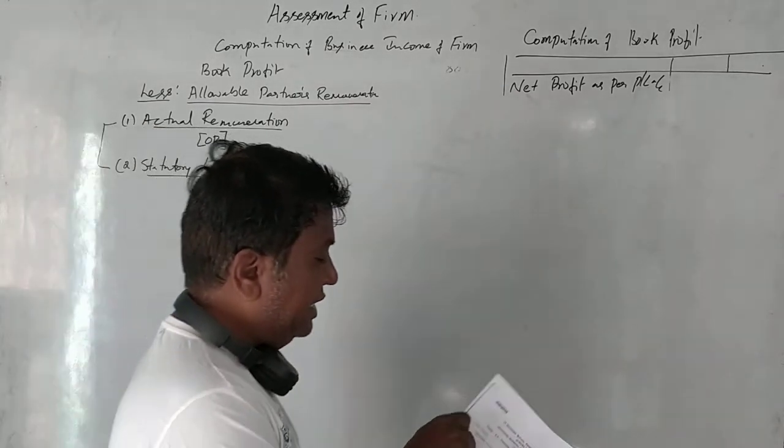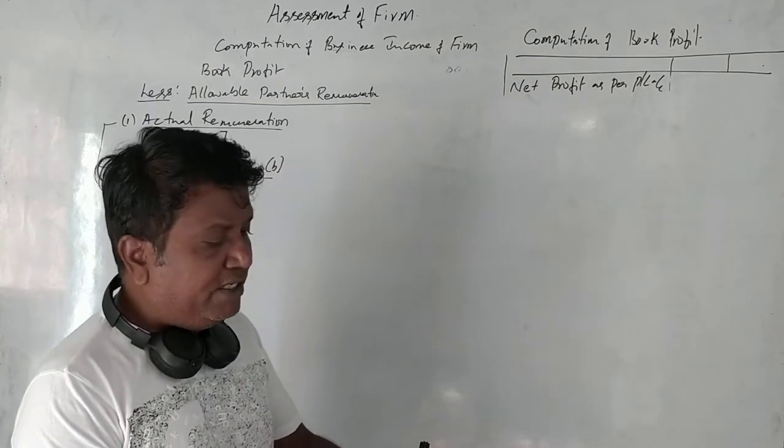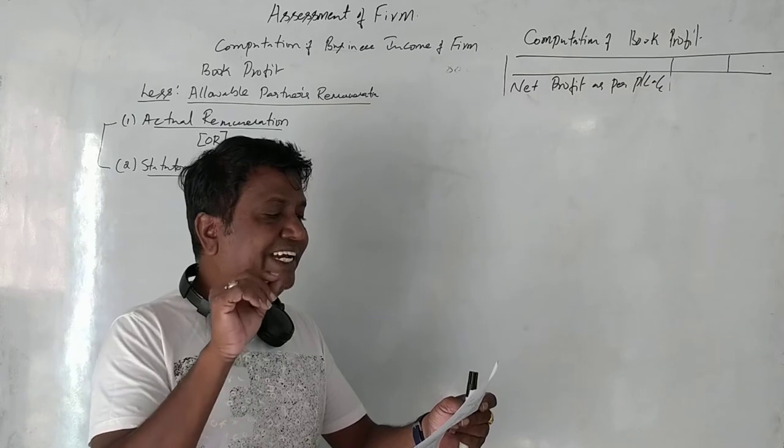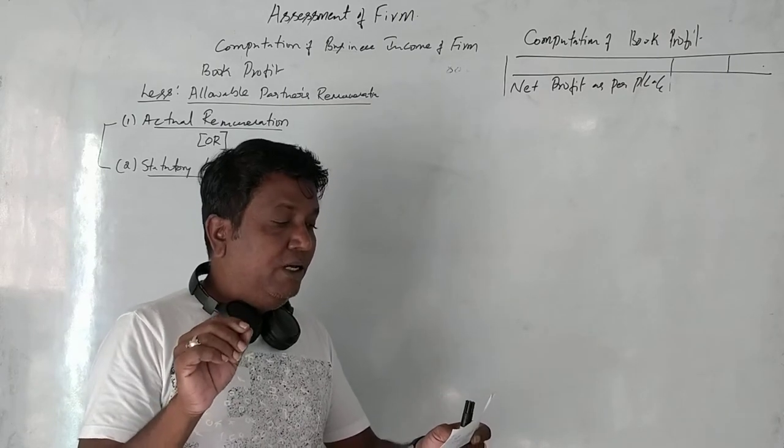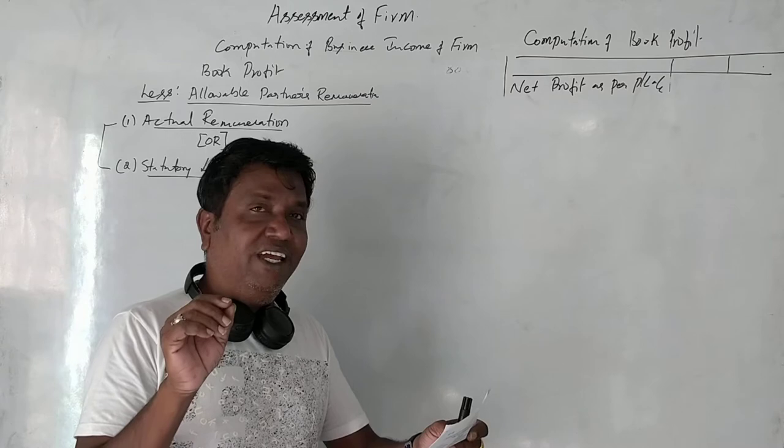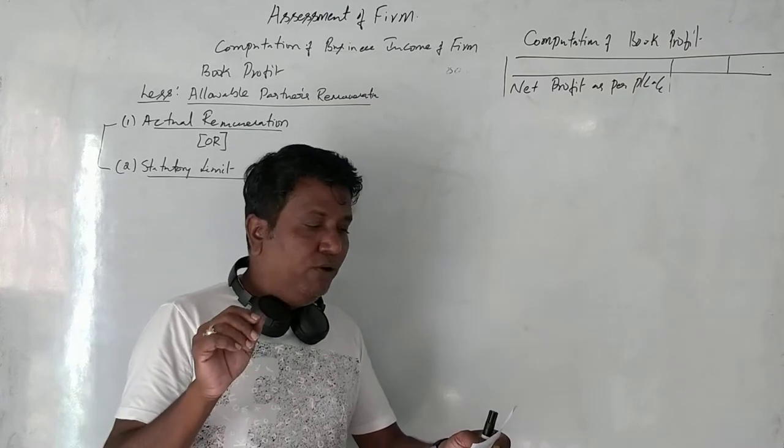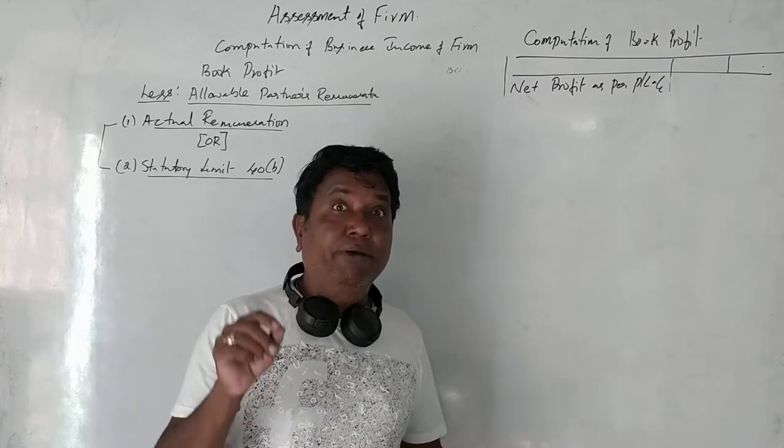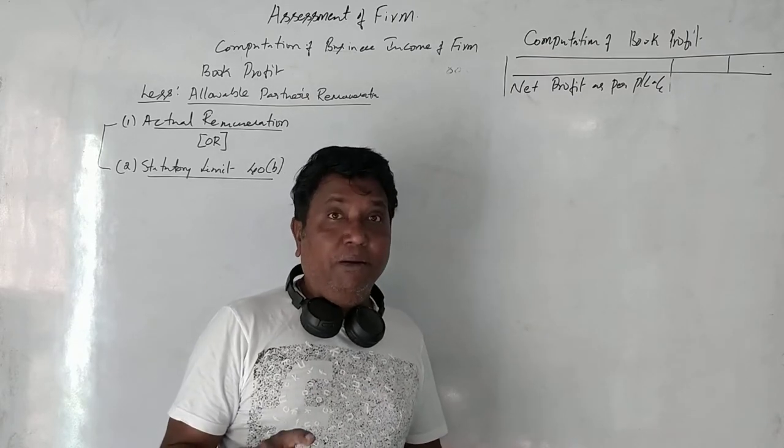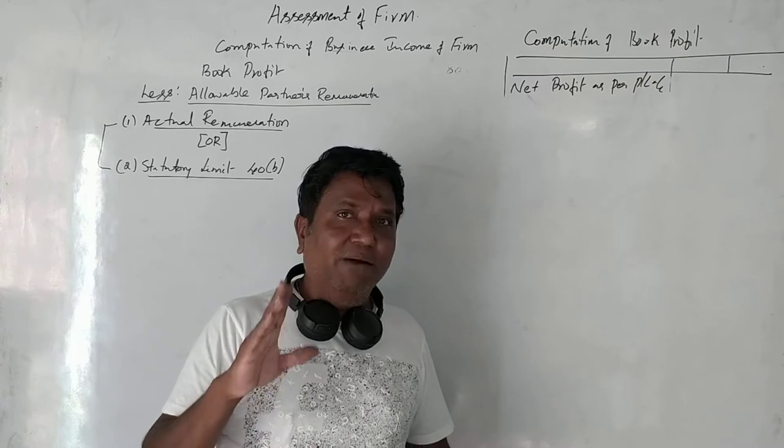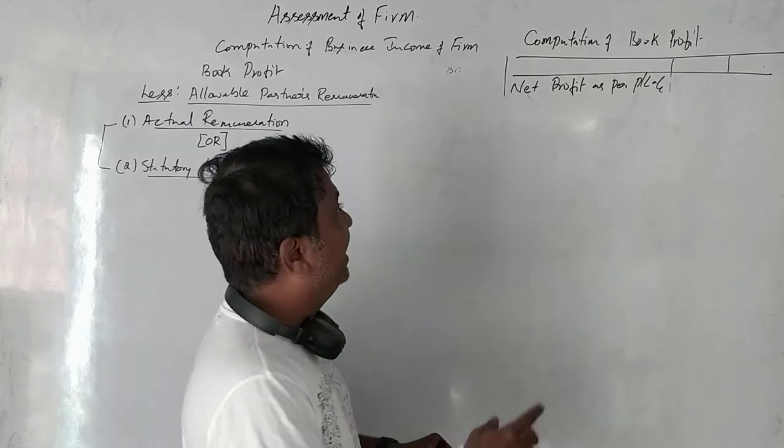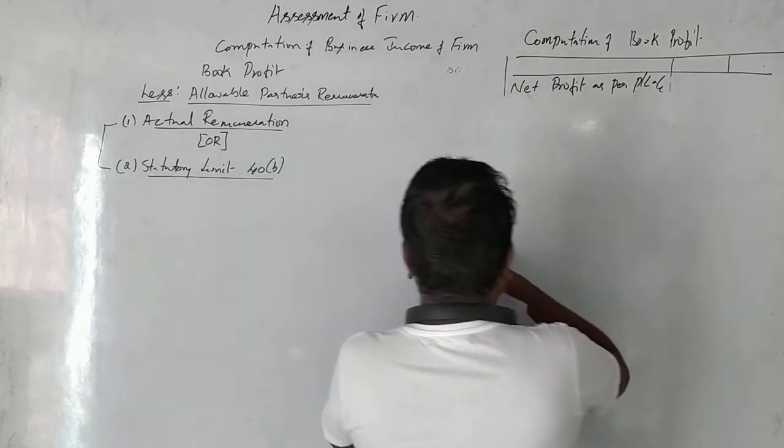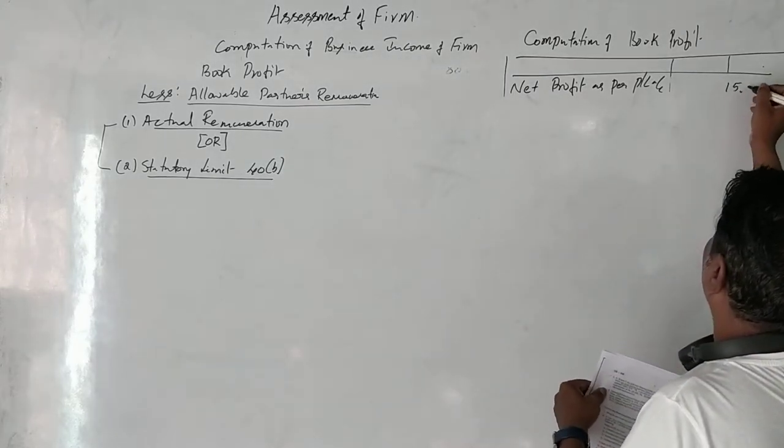2017 question paper. A, B and C partners sharing profits equally carrying on business. The firm's net profit before partner's salary and commission is 15,000,000.